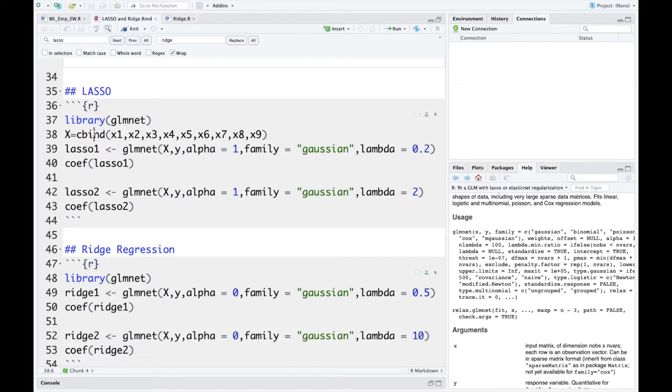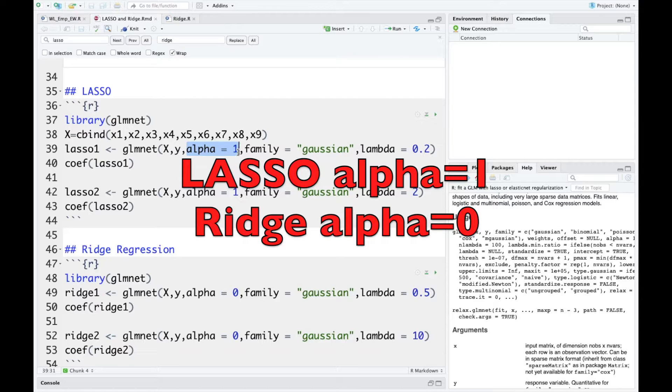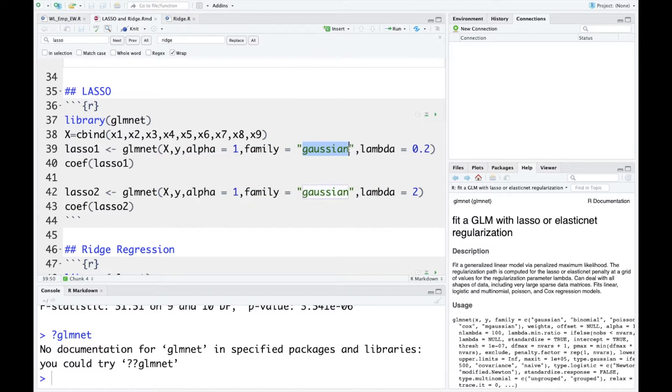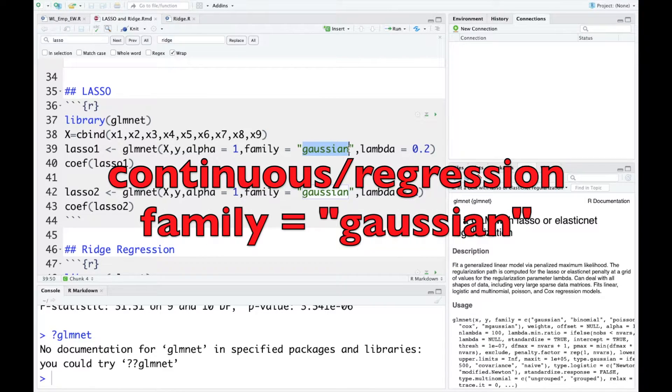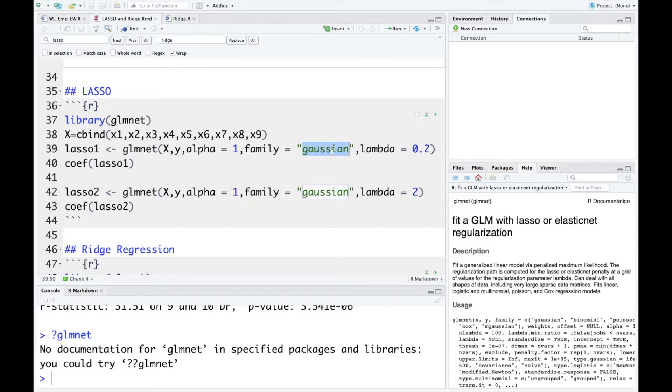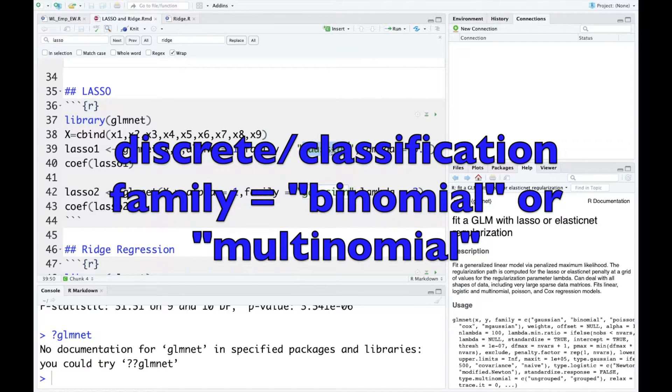After importing the library, I actually combine all the x variables because for glmnet function, you do need to input your x as a matrix, not as separate x variables. After combining all the x variables into a matrix, you just need to key in your x, y here, and then you need to specify your argument alpha as 1 so as to do a Lasso regression. For ridge regression, alpha is set as 0. And for family, you need to set the argument as Gaussian because your response variable is actually continuous and you are doing a regression here. So if your y variable is actually discrete and you are doing a classification, then your family should be set as some other values.